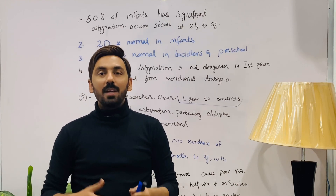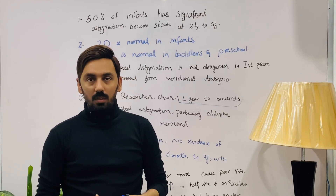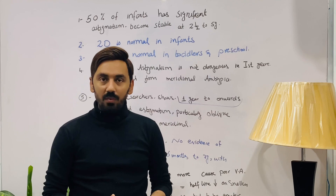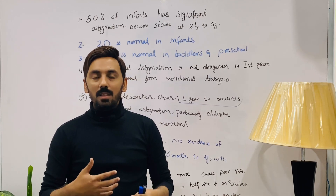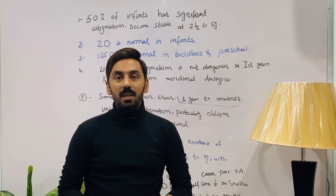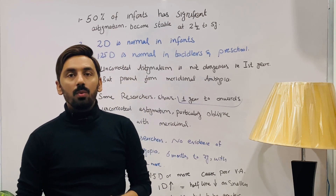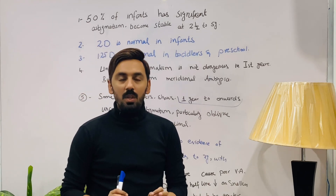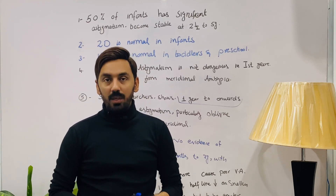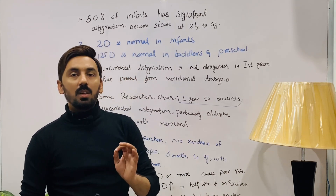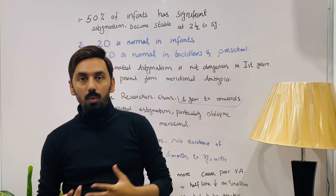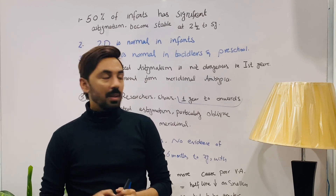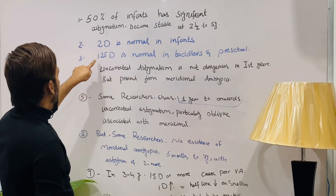The reason is that in infancy, the cornea is growing up and has different curvatures at different locations. The crystalline lens is also developing. If you correct the astigmatism at this age, you disturb the normal physiological process of emmetropization. So if you find two diopters of astigmatism from newborn to one year, there is no need to correct it.